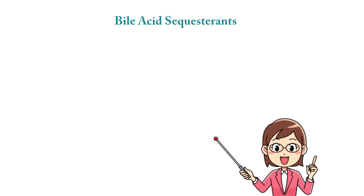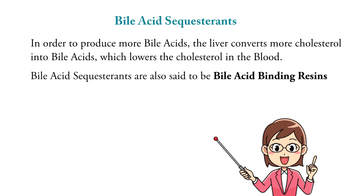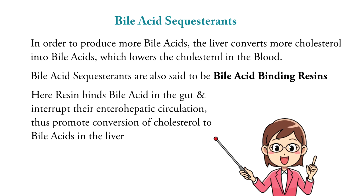Bile acid sequestrants work by promoting the liver to produce more bile acids. The liver converts more cholesterol into bile acids, thereby lowering cholesterol in the blood. Bile acid sequestrants are also called bile acid binding resins. These resins bind bile acids in the gut and interrupt their enterohepatic circulation, promoting conversion of cholesterol to bile acids in the liver.